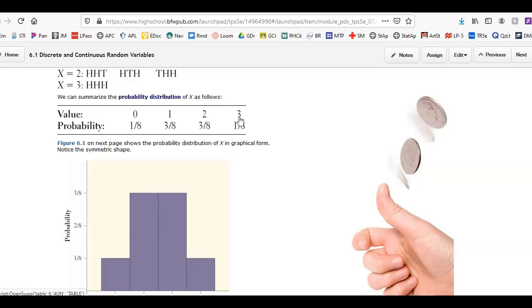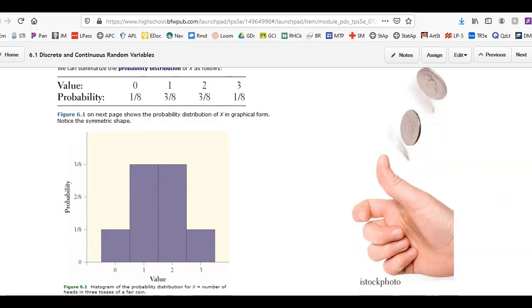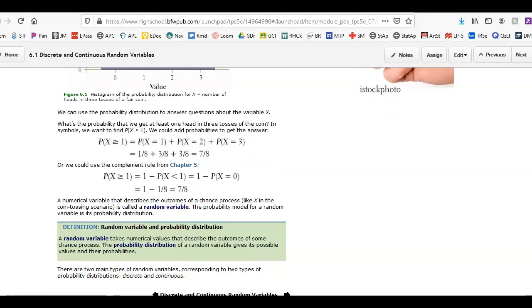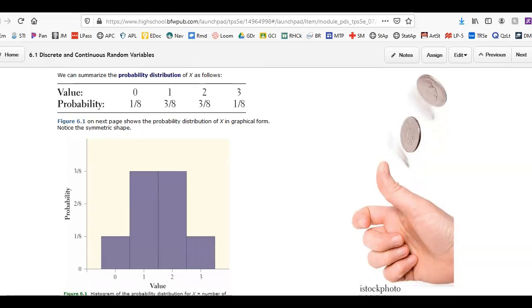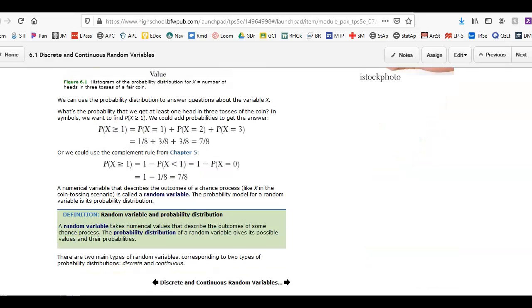So they've created a probability distribution which shows the outcomes and the probability. Remember from last unit we could check to see if this is valid, do the probabilities add up to 1, are the probabilities all between 0 and 1, they are. I could answer some simple probability questions, like what's the probability that you get two or more heads out of three flips? Well it's four out of eight.